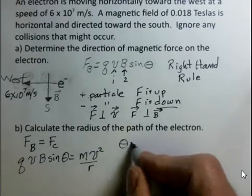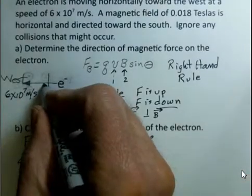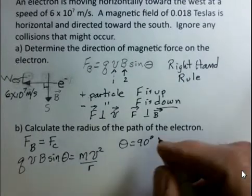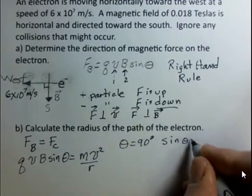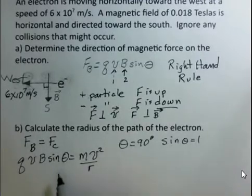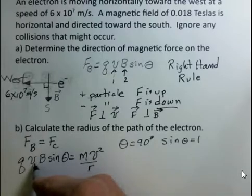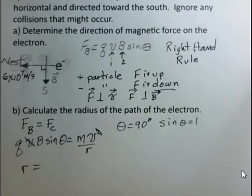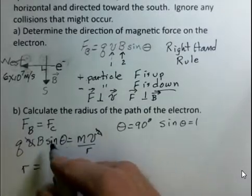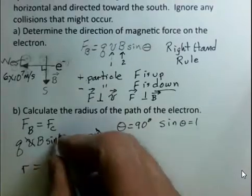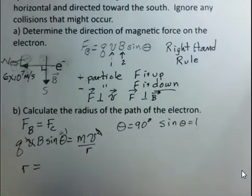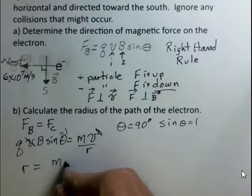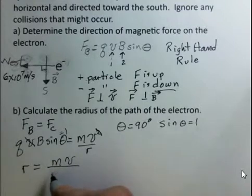So again, I'd remind you that theta is 90 degrees. There's a right angle between the velocity and the magnetic field. So the value of the factor sine theta will be 1. You can see there's V squared on the right, just a single V on the left. I'm going to cancel one factor of the velocity. And now solve for R. R in symbols has a value. I multiply both sides by R, I divide both sides by Q and B. And I have the mass of the electron times the speed of the electron divided by the charge of the electron divided by the magnetic field.